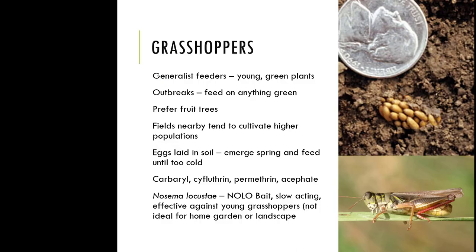Grasshoppers can be a very irritating insect to try to control. They're generalist feeders — they really will just feed on anything. They really like peach trees and fruit trees. When there are giant outbreaks they basically feed on anything that's green. If you live nearby a field these guys tend to cultivate higher populations — more pasture land is going to have more grasshoppers. They tend to lay their eggs in the soil, emerge in the spring, and start to feed until it gets too cold. Some species might have one generation a year, others will have multiple, so we generally see they're a problem around summertime.